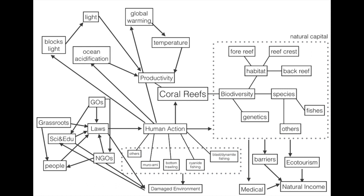GOs should create laws to control human action. They should also supply funding to science and education, and support non-governmental organizations and their activities. NGOs should obey the laws that GOs set, and should also act as watchdogs over the people.